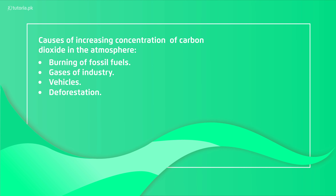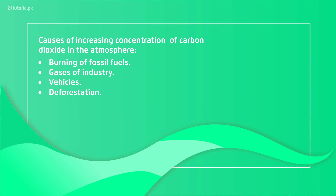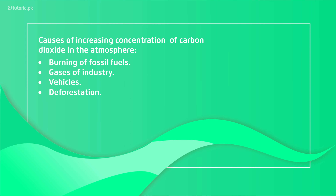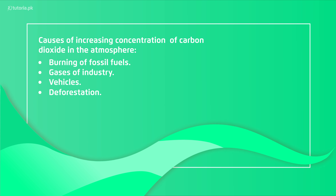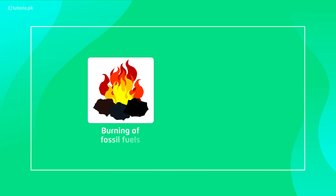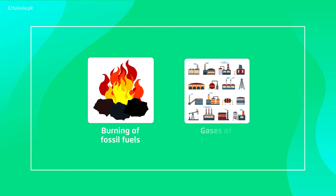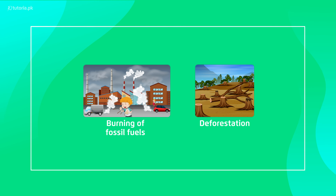Then the industries — waste gases are also created. Because in your vehicles there are fossil fuels, so when your vehicles move, they burn fossil fuels and carbon dioxide is released into the environment. And then the last reason: we are cutting down forests to develop new societies. That's why, because plants are recyclers of carbon dioxide, and when plants and forests are not there, carbon dioxide will not be recycled and its concentration in the environment will increase.